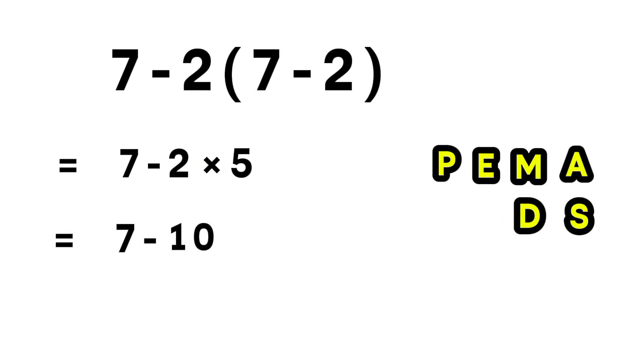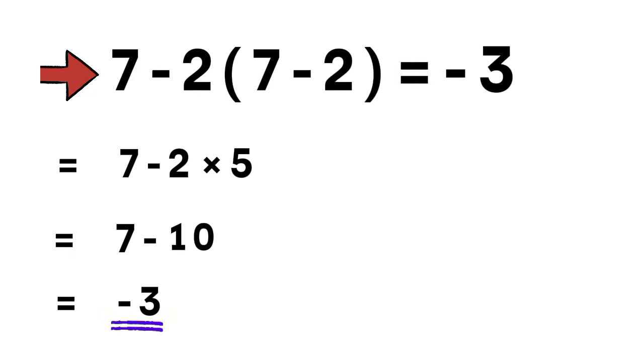Now we are left with 7 minus 10. And 7 minus 10 equals negative 3. So the correct answer to this expression is negative 3.